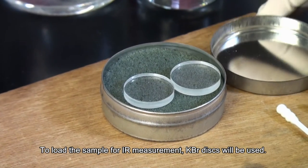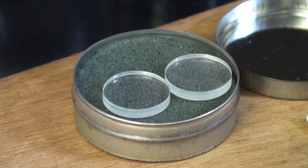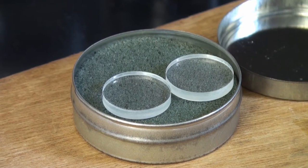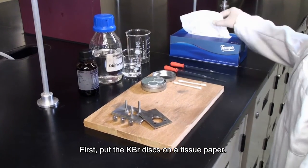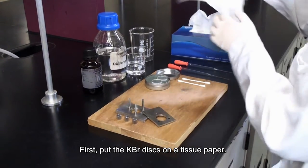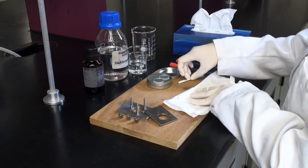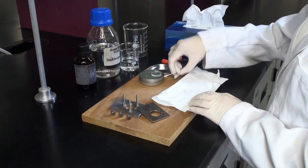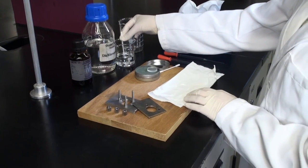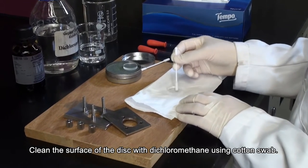To load the sample for IR measurement, KBr disks will be used. First, put the KBr disks on a tissue paper. Clean the surface of the disks with dichloromethane using a cotton swab.